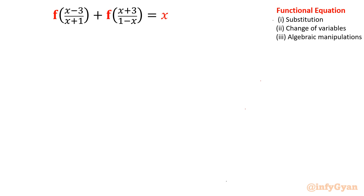I am going to substitute the first bracket as u. I will substitute this bracket as u, then find out x in terms of u and substitute that value for the rest of the two terms — the right-hand side and the second function. So I am putting u equal to x minus 3 over x plus 1.